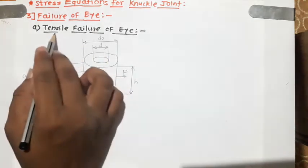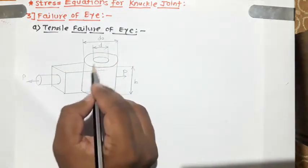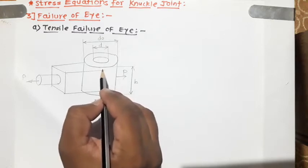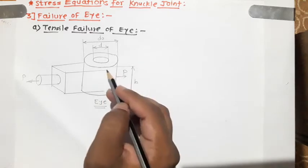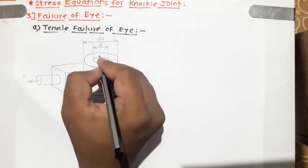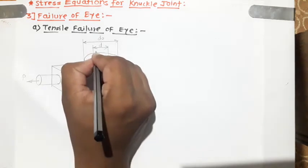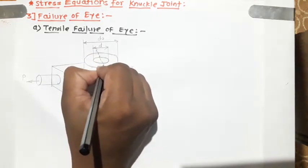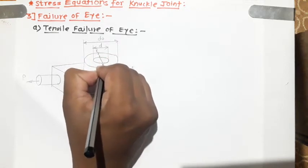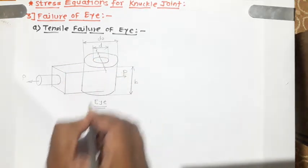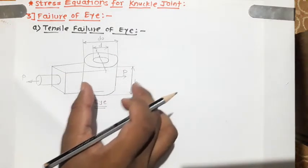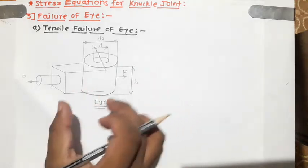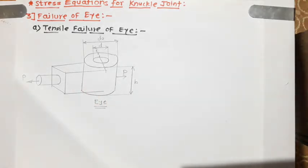For the tensile failure of I, this I-end will fail at the weaker section — it is a common principle that failure always occurs at the weak section. The weak section of this I-end is at this region, so tensile failure will occur across that section. We need to draw the diagram of the I after failure and from that derive the equation of tensile stress.